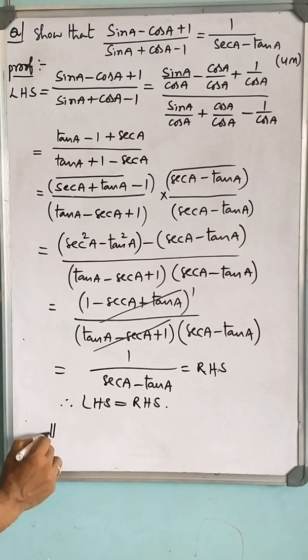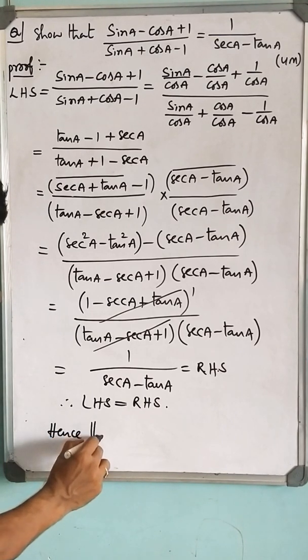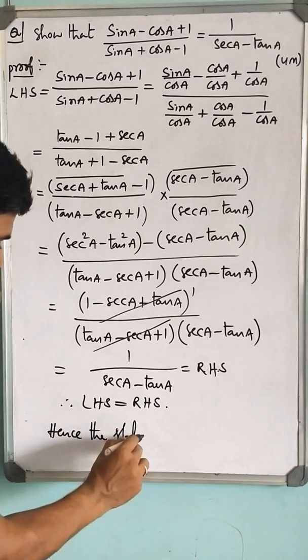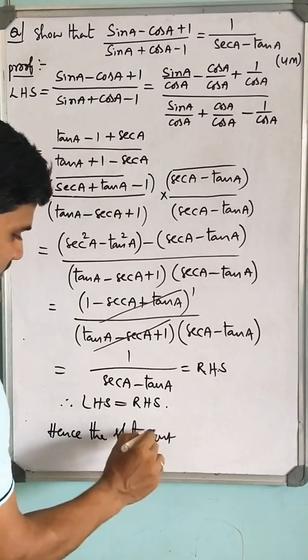Therefore, hence the statement is proved. This is how we prove the given trigonometric identity.